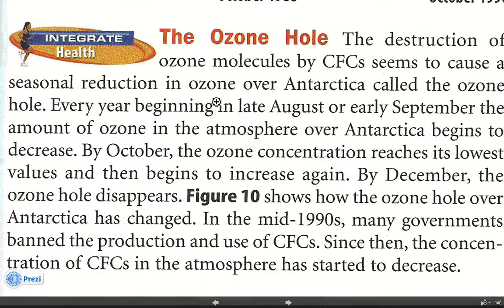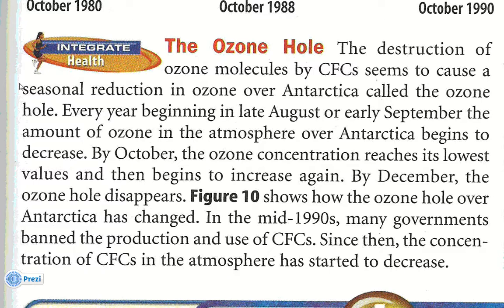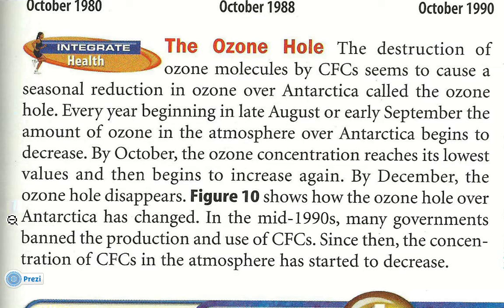The ozone hole: The destruction of ozone molecules by CFCs seems to cause a seasonal reduction in ozone over Antarctica called the ozone hole. Every year, beginning in late August or early September, the amount of ozone over Antarctica begins to decrease. By October, the ozone concentration reaches its lowest values, then begins to increase again. By December, the ozone hole disappears. In the mid-1990s, many governments banned the production and use of CFCs, and since then the concentration of CFCs in the atmosphere has started to decrease.